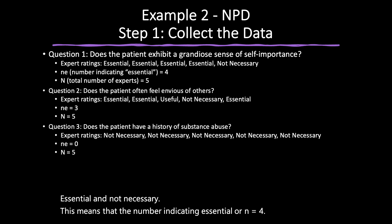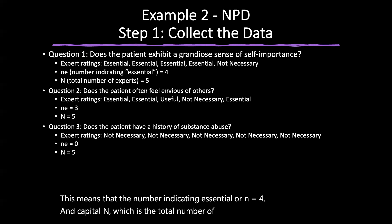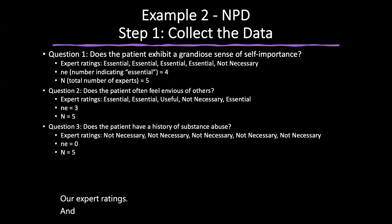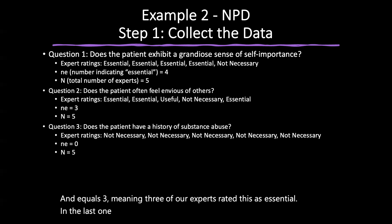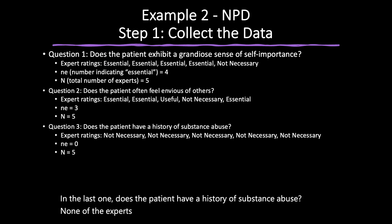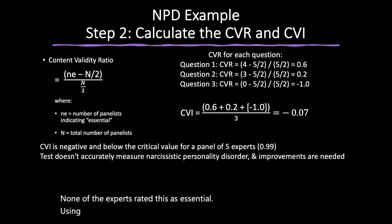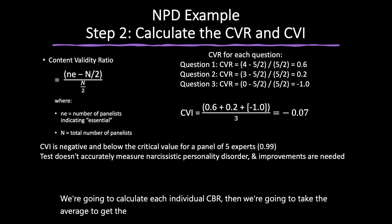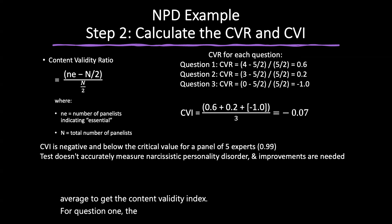Question four: 'Does the patient have a persistent pattern of disregarding social norms and rules?' — eight experts rated it essential. Question five: 'Does the patient show a lack of empathy?' — nine experts rated it essential. Using the CVR formula, the CVRs for each question are 0.8, 0.6, 1.0, 0.6, and 0.8 respectively. The average of these scores gives a CVI of 0.76. Comparing this to the critical value for 10 experts — which is 0.62 — our CVI is above the critical value, indicating high content validity and that the questionnaire accurately measures antisocial personality disorder.